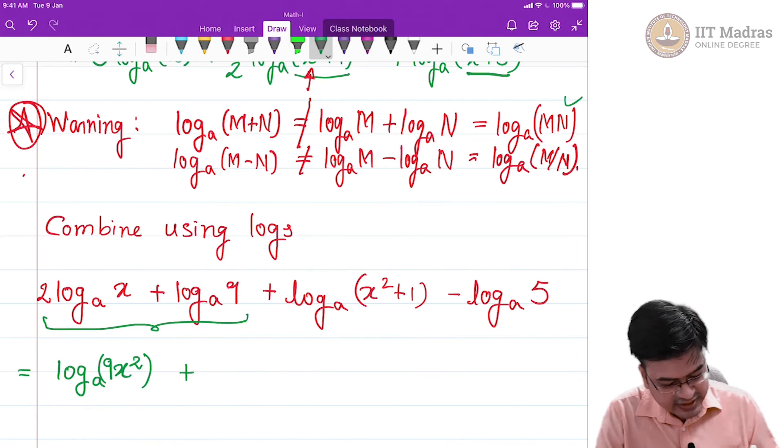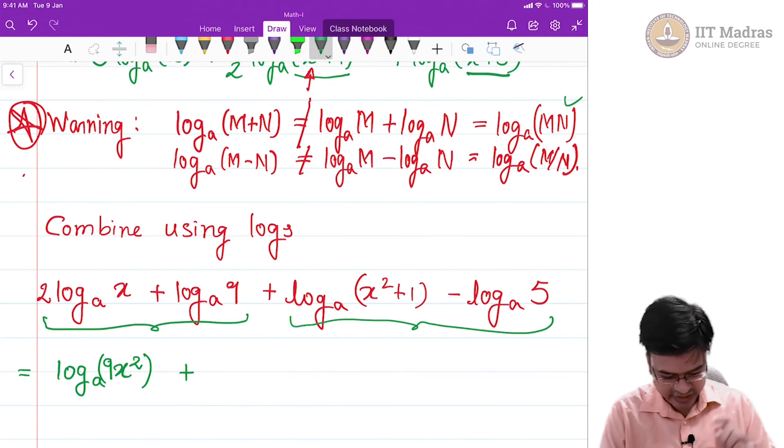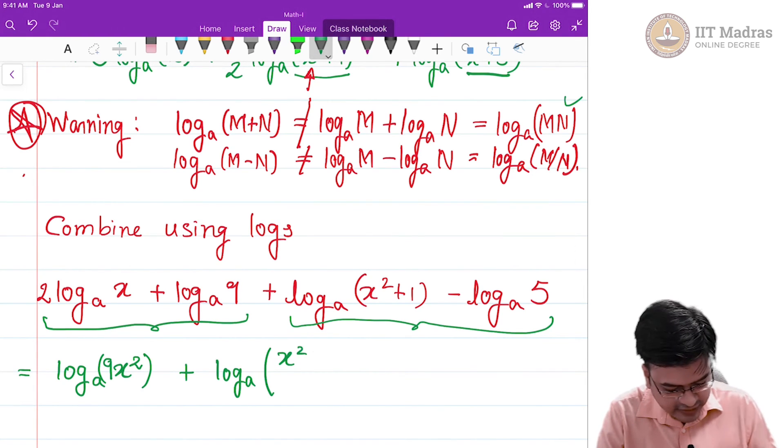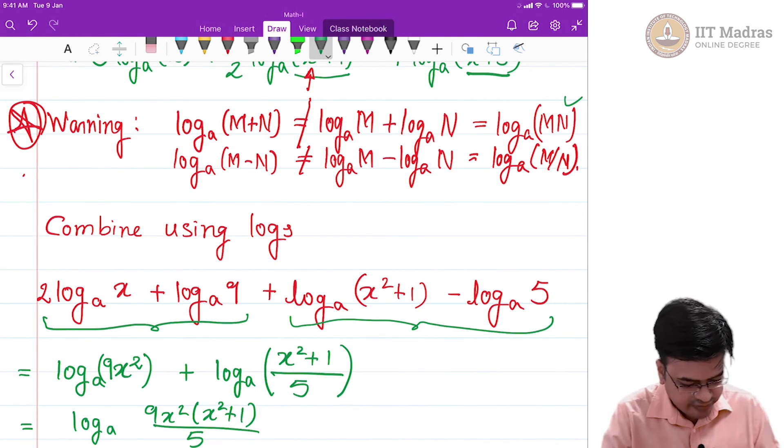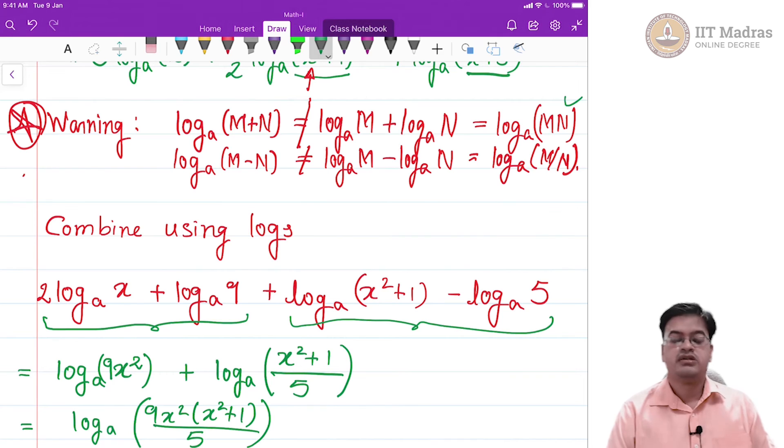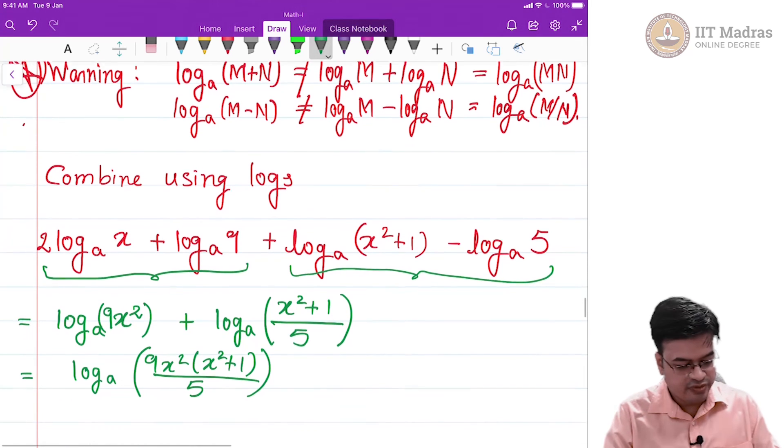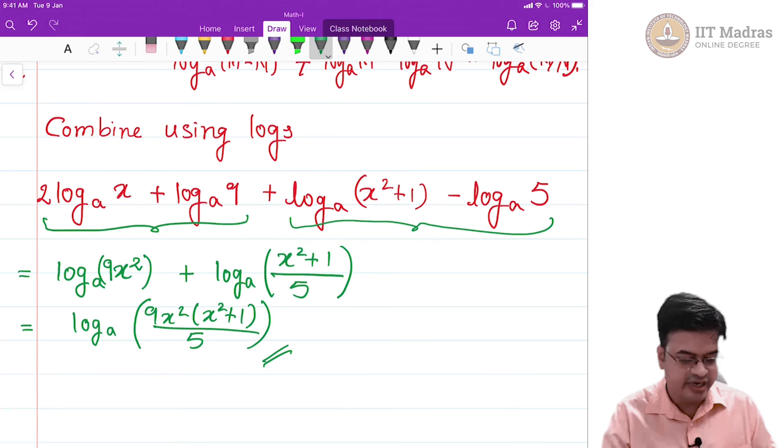Now, let us look at the next term which is this next two terms in fact and there is a negative sign. Naturally a quotient rule will come and you will have something like log to the base a of x square plus 1 upon 5. Can you combine these two? Again apply the product rule and you will get this to be equal to log to the base a of 9 x square times x square plus 1 upon 5. So, this is how you can simplify your life while studying logarithms by giving a combined expression.